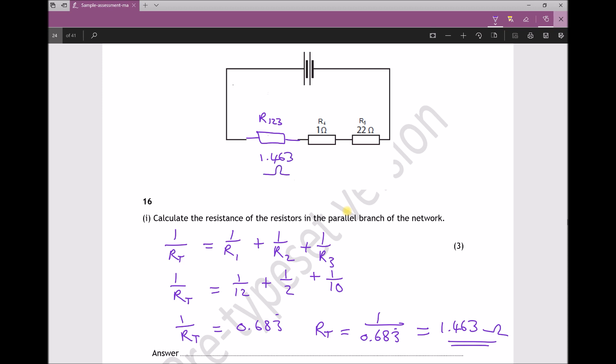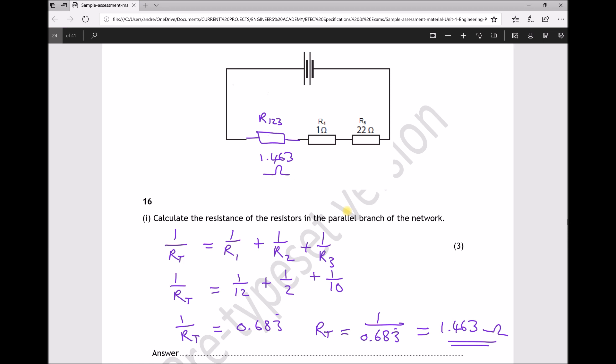Now the second part of the question wants us to calculate the total resistance of the network. All we would need to do now is for series resistors add those three resistances together. So let's move down to our working area.